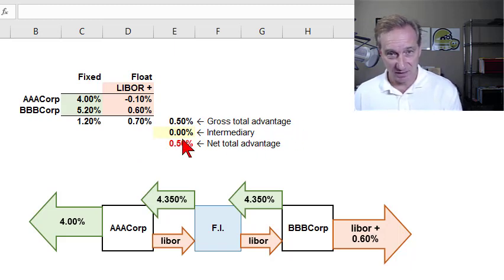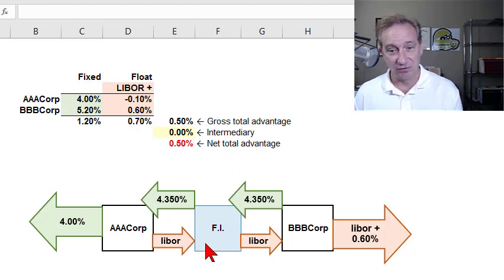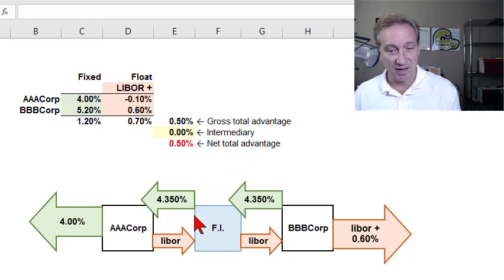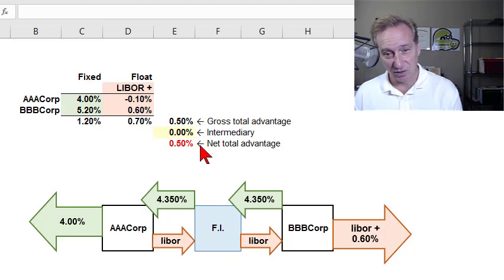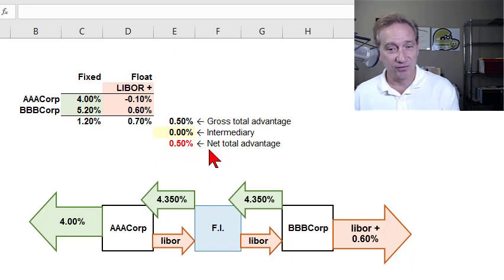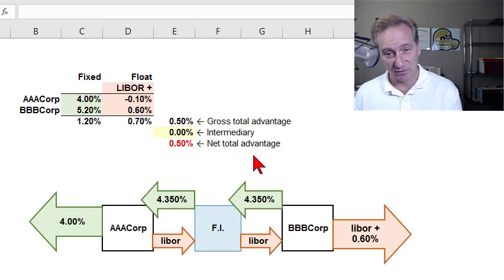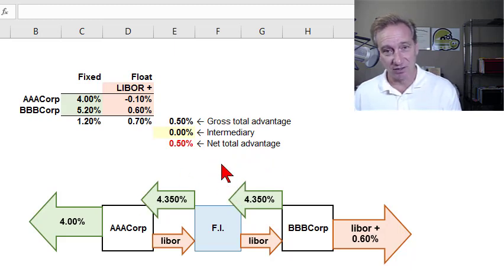In this case the gross advantage is 50 basis points. Keeping the initial iteration simple, we assume the financial intermediary — the investment bank facilitating the swap — charges nothing for that service, so the net total advantage is also 50 basis points.